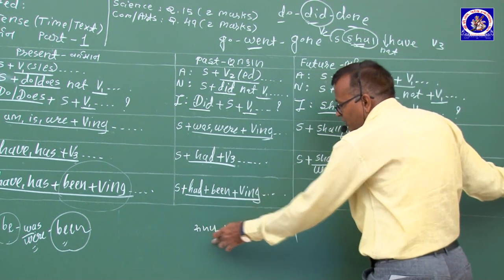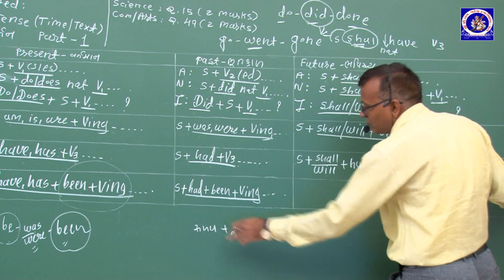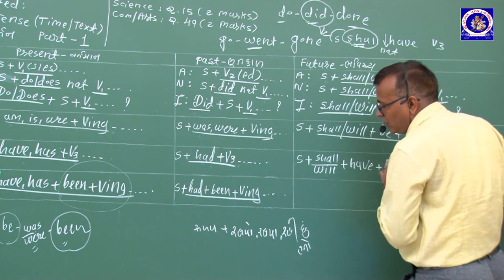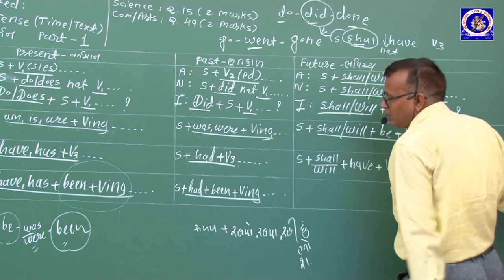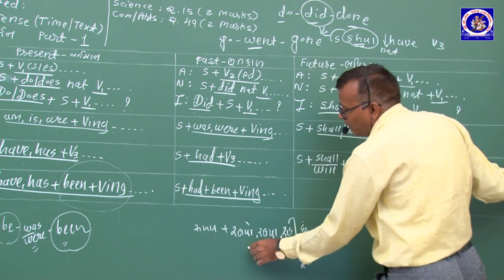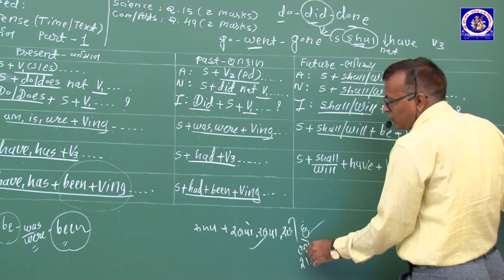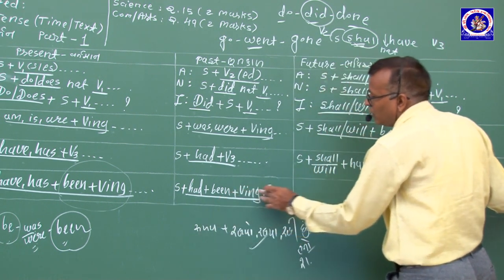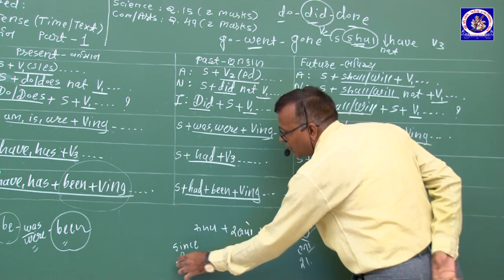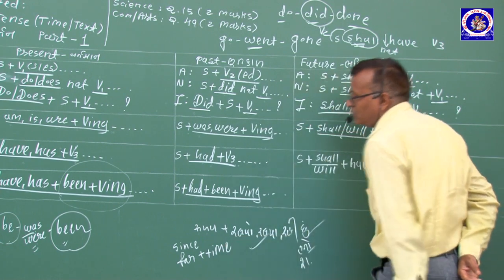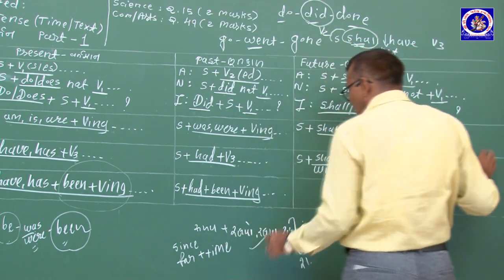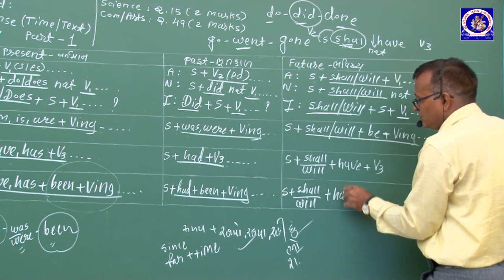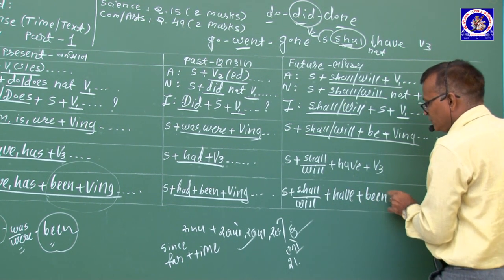ઉ = 'સવારથી અંગ્રેજી શીખવી રહ્યો હતો' → Past Perfect Continuous (had been + Verb-ing). ભવિષ્ય: 'shall/will + have + been + Verb-ing' — Future Perfect Continuous. shall/will = ભવિષ્ય; have/has + been + Verb-ing = Perfect Continuous form.